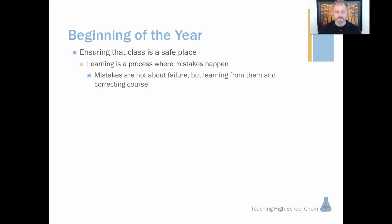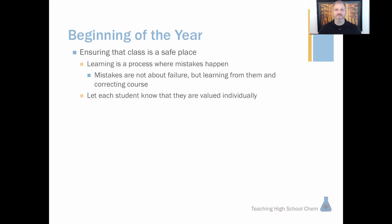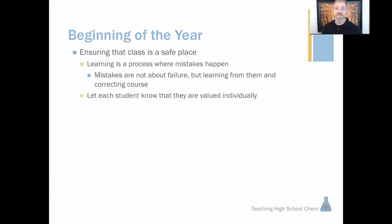Teaching kids that mistakes are not about failure, but about learning and correcting — like a guided missile that gets off course and corrects itself rather than exploding — is important. Or a homing pigeon that gets turned around doesn't stop flying; it makes a correction and gets where it needs to go. That's how we need to approach learning. And letting each student know they're valued — the troublemaker, the quiet kid, the weak kid — they're all valuable in my class. When I interact with them between class periods and ask genuine questions, I'm winning their hearts and I'm going to win their minds.